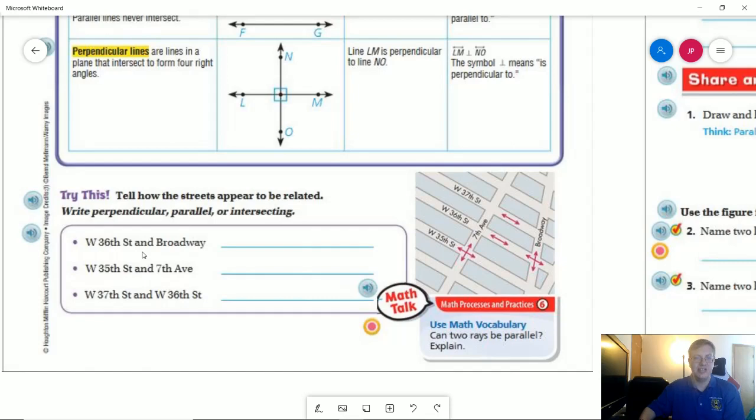So let's take a look at this. If we look at West 35th and 7th Avenue which is the closest one, that is going to be intersecting and you can see where they intersect. If I'm comparing West 36th and 37th, these two lines run parallel to each other. This one should be perpendicular because they intersect but they intersect at a right angle and then our other option would be our intersecting lines.